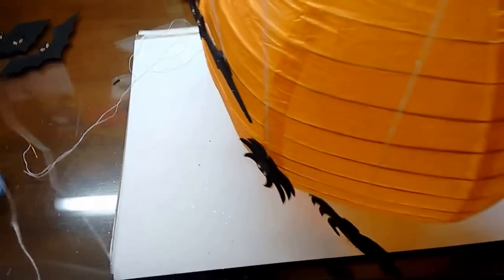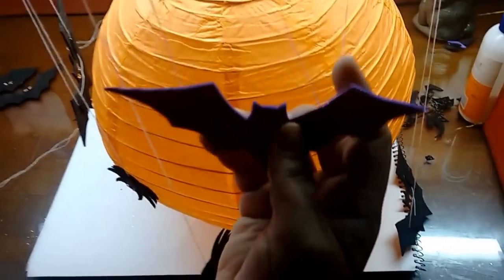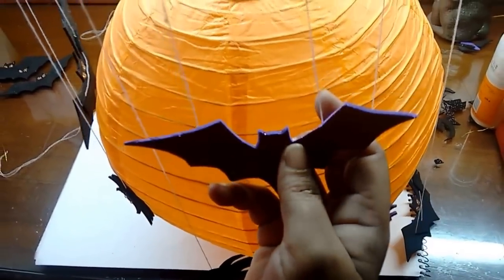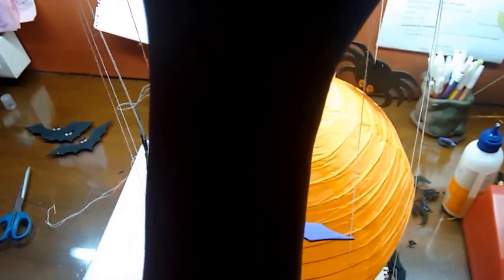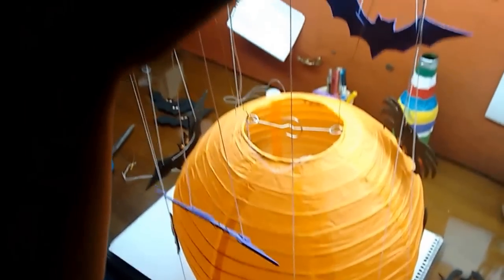Now I will hang the bat also in the similar manner as the spider. Just take the two threads and hang it to any length that you want. Just put the thread through on the rim and then secure it with scotch tape.